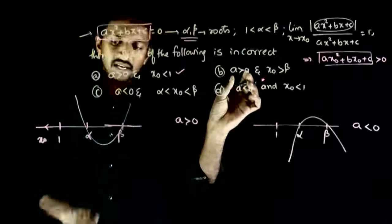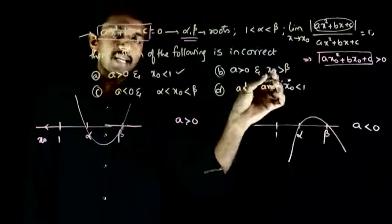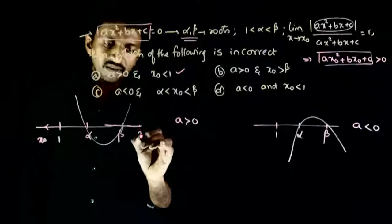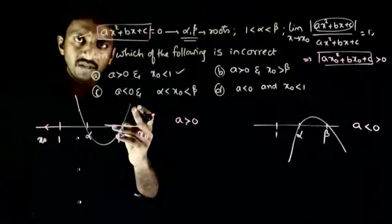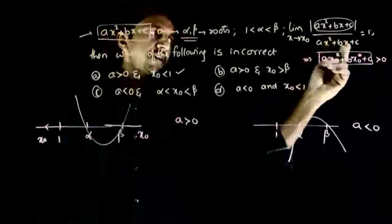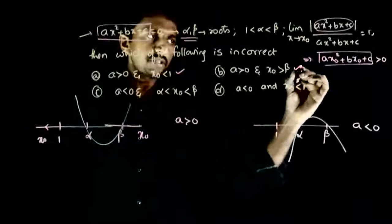If a is greater than zero and x0 is greater than beta, that means if x0 lies after beta, then also the function value is positive. So the limit will be plus one. This is also right.